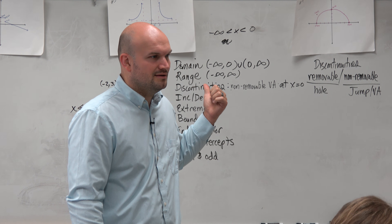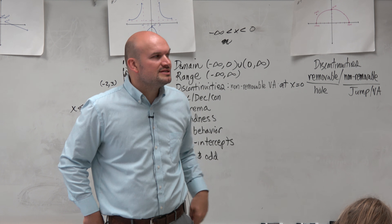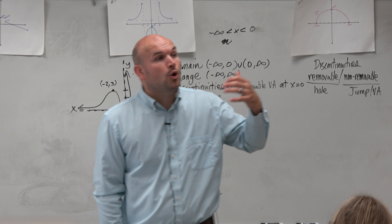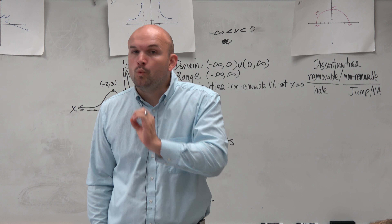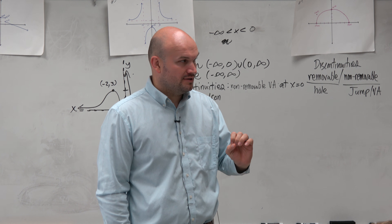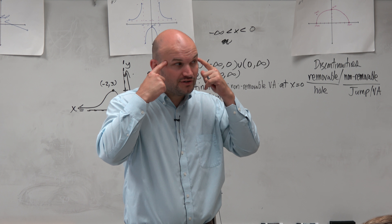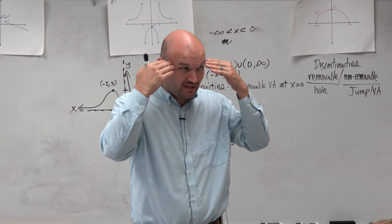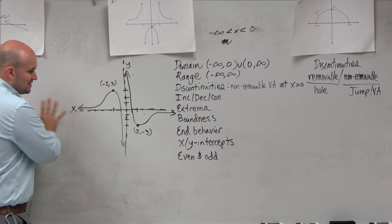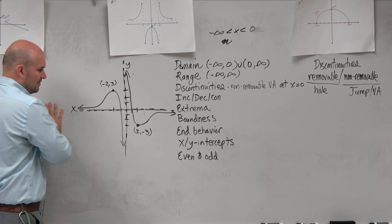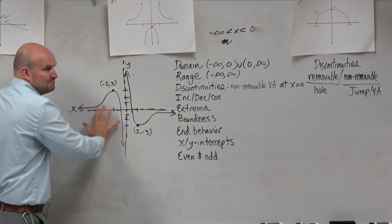Discontinuities — we're asking: one, is the graph continuous? And two, what type of discontinuity is it? The way to test if a graph is continuous: can you draw the graph without lifting up your pencil? And I can't, because I have to somehow cross this asymptote. So it's definitely discontinuous. Now we want to identify the discontinuity.